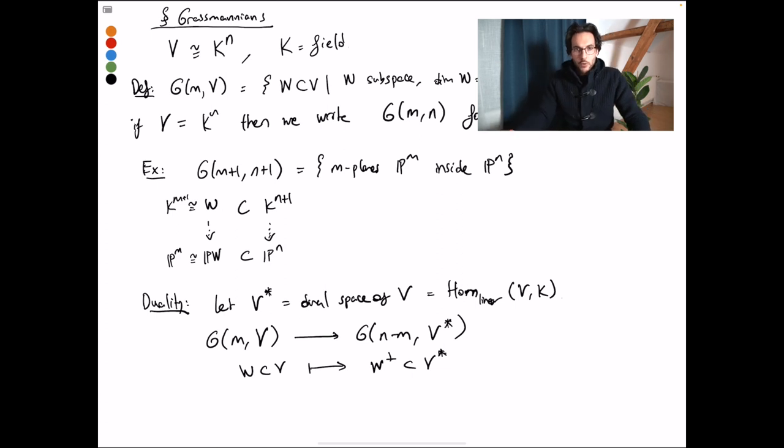So the annihilator is the space of functions, linear functions, that are identically zero on w. Here n was the dimension of the space v, and of course the annihilator of an m-dimensional subspace is going to be of dimension n minus m.